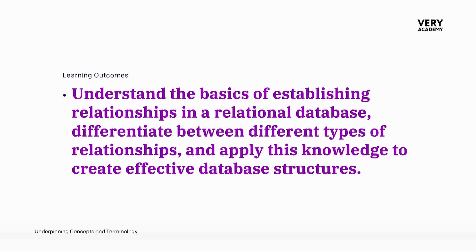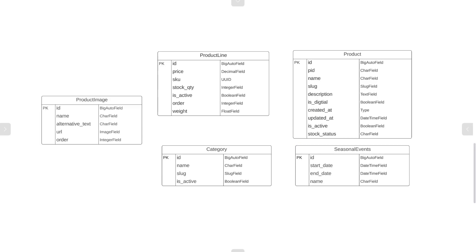Let's take a look at the existing models that we've created and start to think about what relationships mean between the tables. The data in one table is related in some way to data in another table. We're building these relationships because we're going to be using them when we extract data from our tables. By building relationships between tables, when we try to extract data from, say, the product table, any related data can also be queried and returned.